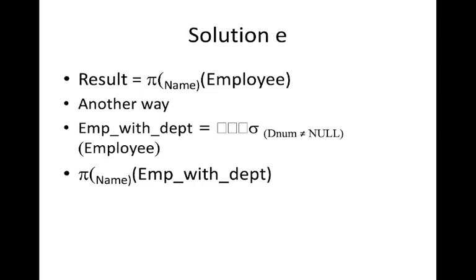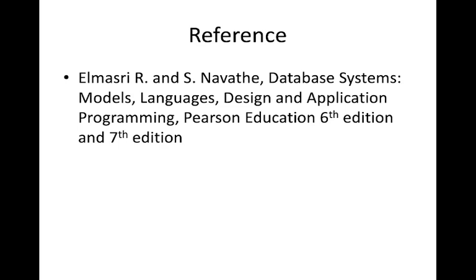To summarize: understand which attributes are in which tables. If the required output spans two tables, perform an equi join on those tables — you can also use natural join, but equi join is fine and you don't need to worry about superfluous attributes. After joining, you can then project or select any data from that joined table. That covers all the relational algebra problems. Thank you.